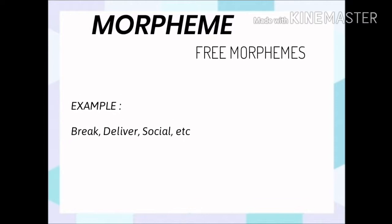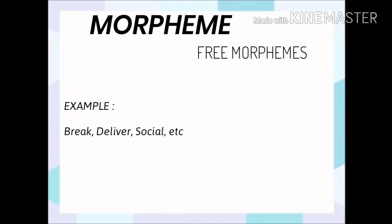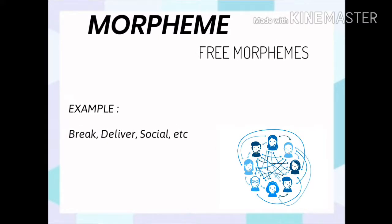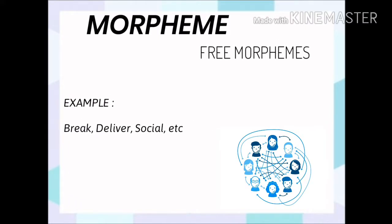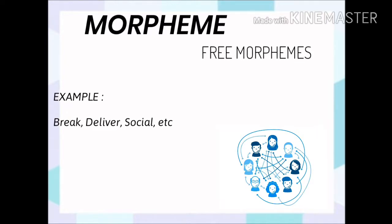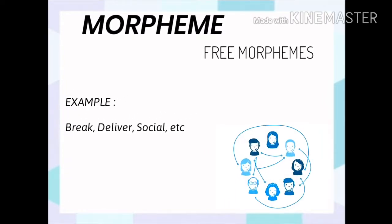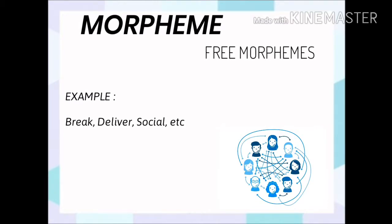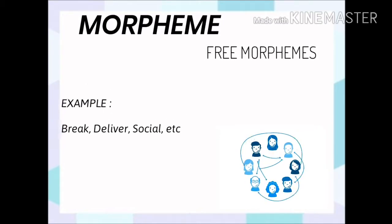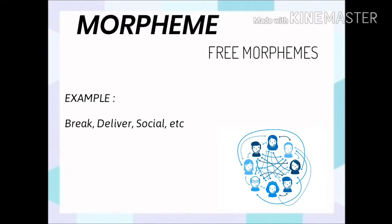Morpheme is the smallest part of a word. There are two parts of morphemes: free morphemes and bound morphemes. The first, free morphemes, are morphemes that can be uttered alone with meaning. For example: break, deliver, socio, etc.